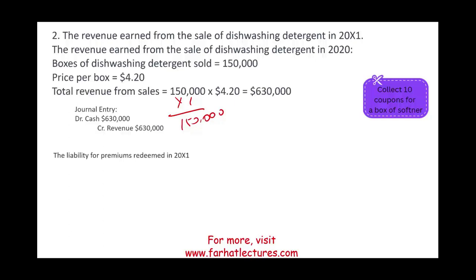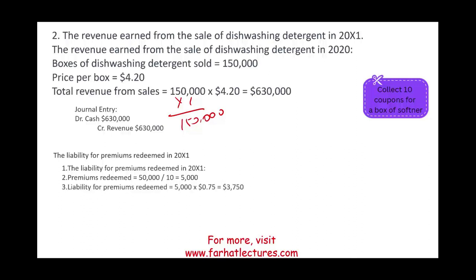In 20X1, we were told 50,000 of these coupons were redeemed. 50,000 divided by 10 means we have to give out 5,000 boxes of softener. The liability for premiums redeemed is 5,000 times $0.75, which equals $3,750. We debit premium expense and credit inventory, because we're sending these out as a redemption — it's an expense for us since customers aren't giving us anything in return.